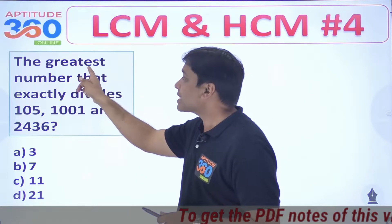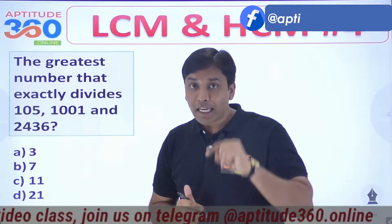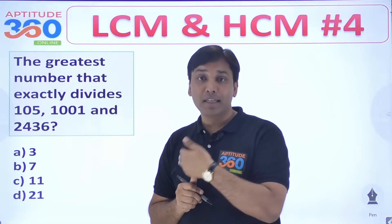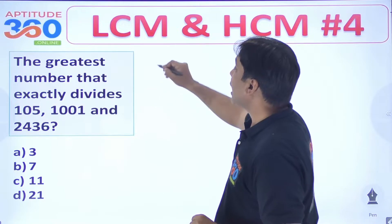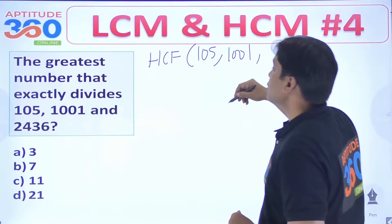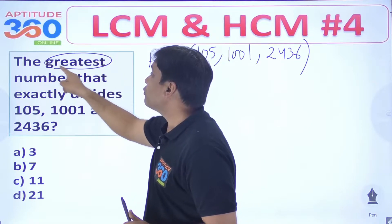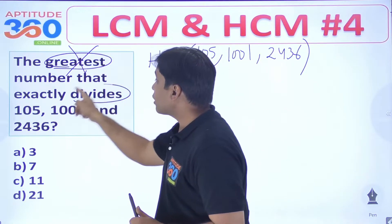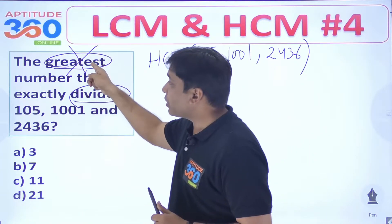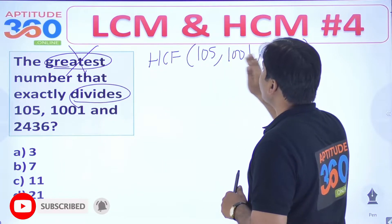The very first problem is: find the greatest number that exactly divides 105, 1001, and 2436. I have all the questions in the description box - if you're watching my videos for the very first time, go to the description box, solve all the problems on your own, and then come back to this video. Now how do we find the HCF of 105, 1001, and 2436? The keyword here is 'dividing' - if it is dividing, it must be a factor, and 'greatest' combined with 'factor' means they are asking for HCF.